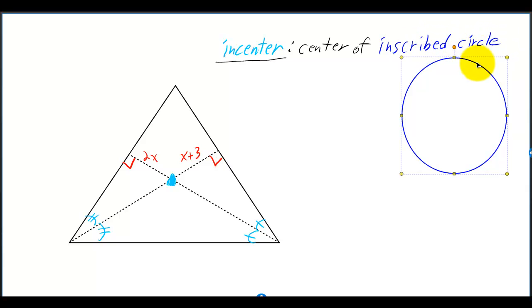Now I'll put the inscribed circle in. The inscribed circle is tangent to all three sides of the triangle. In other words, it hits each side at only one point.